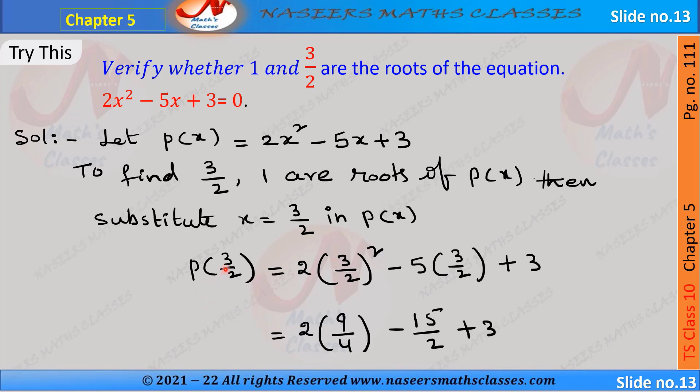Then p(3/2) = 2 × (3/2)² - 5 × (3/2) + 3. And next this can be written as 2 × 9/4 - 15/2 + 3, because 3 squared means 9 in denominator, 2 squared means 4, here we multiply 5 into 3 we get 15.